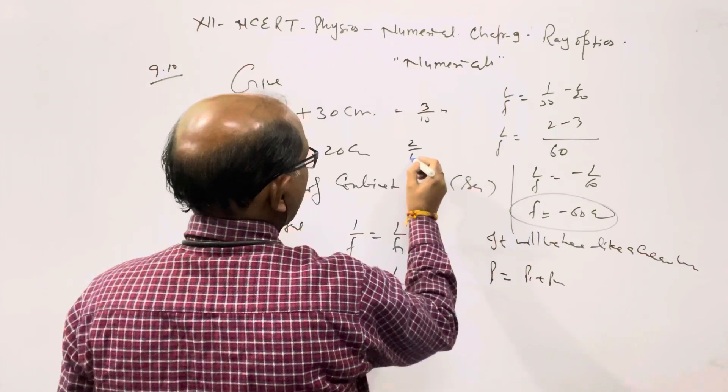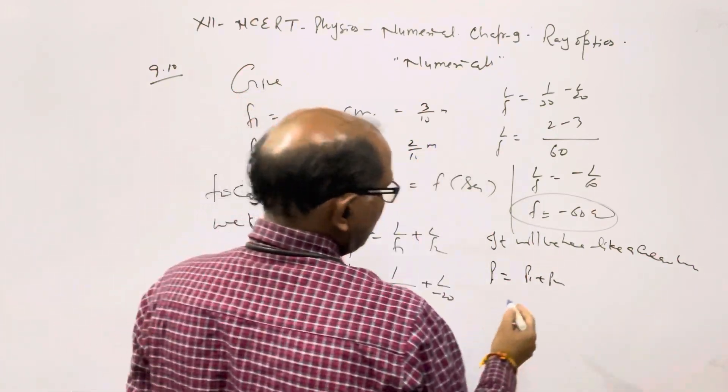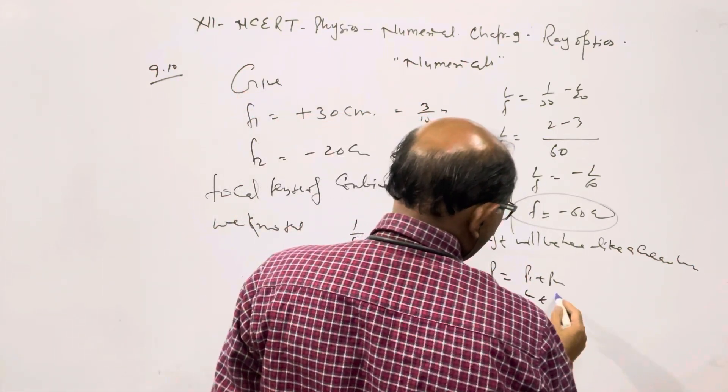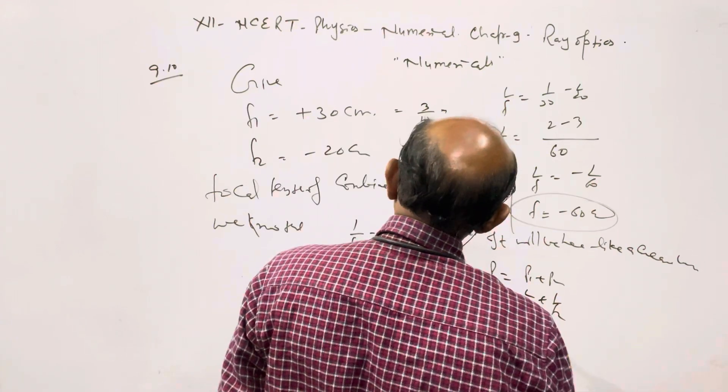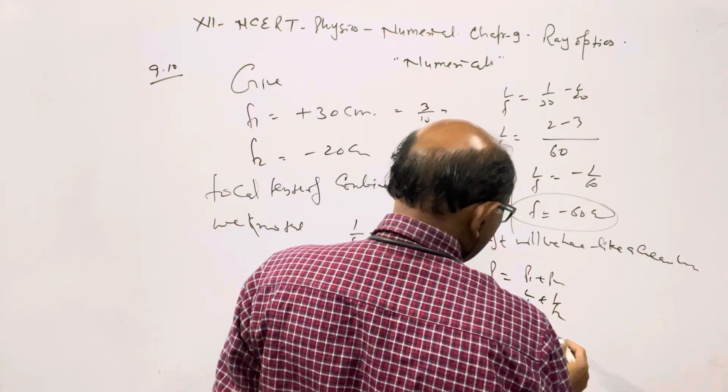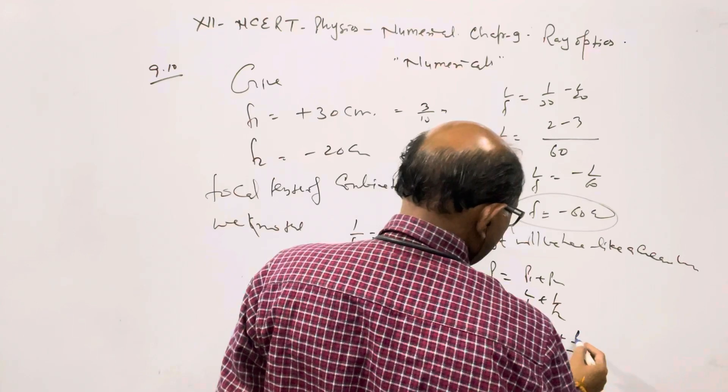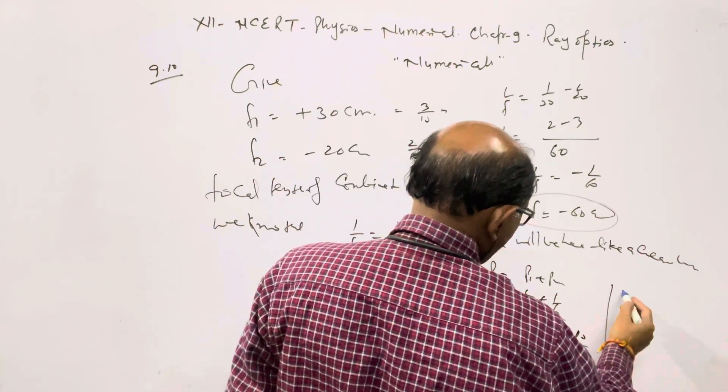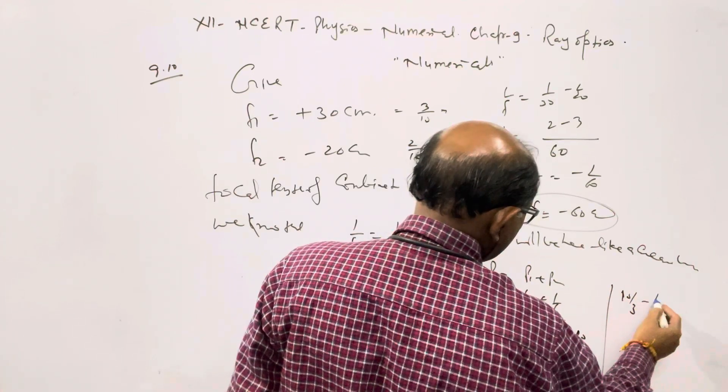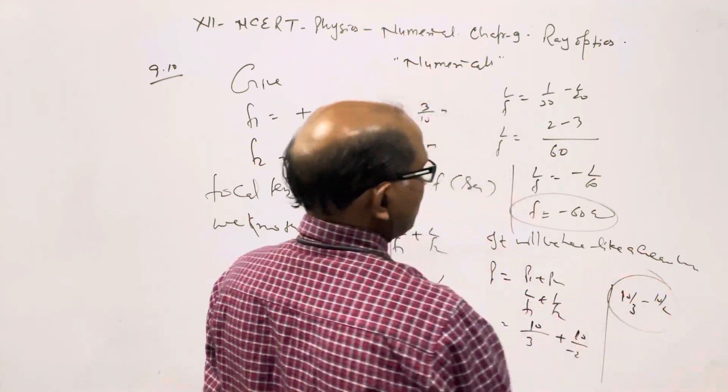Converting: 30 cm = 3/10 meter and 20 cm = 2/10 meter. So power P = 1/(3/10) + 1/(-2/10) = 10/3 - 10/2. Calculate this to get the answer in diopters.